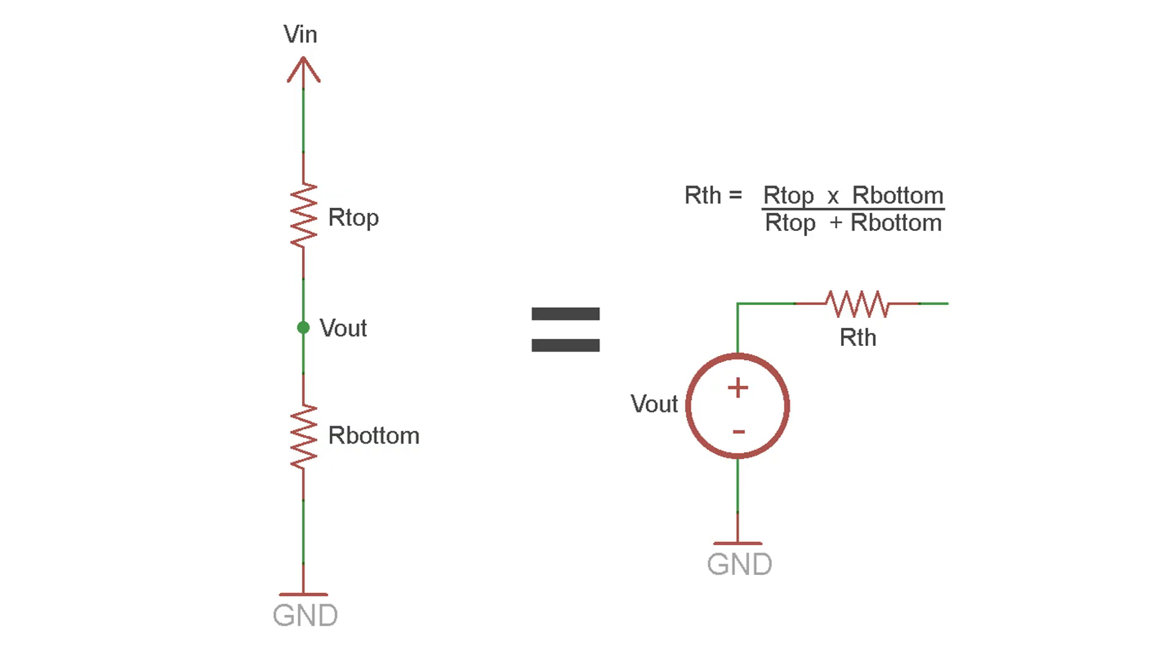But if you want to screw around with resistor values and see what you can get away with, you can calculate the Thevenin equivalent resistance of a voltage divider using this equation. And yes, it just so happens that it's the same as the parallel resistance formula.